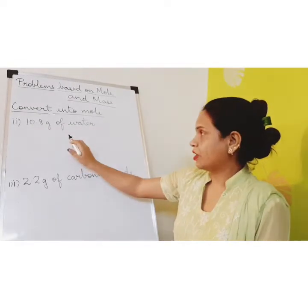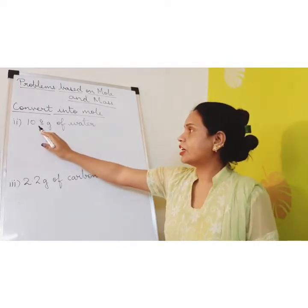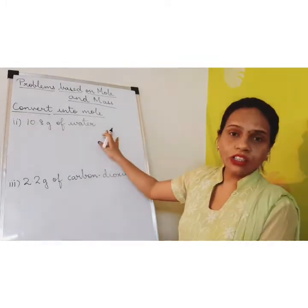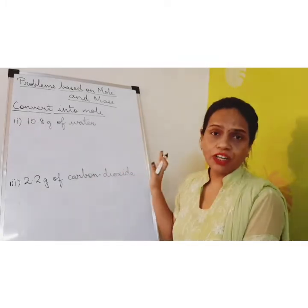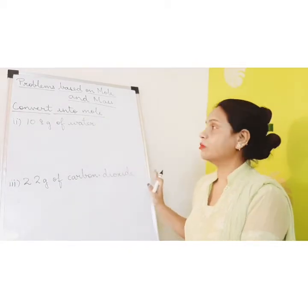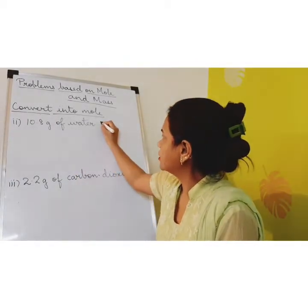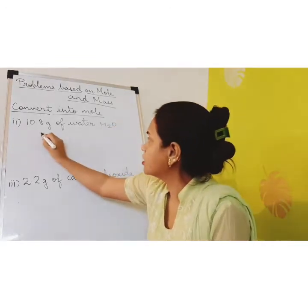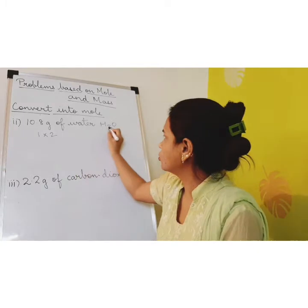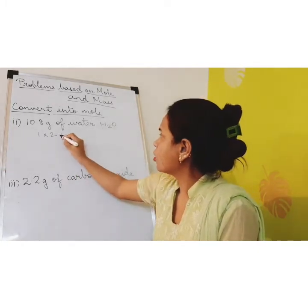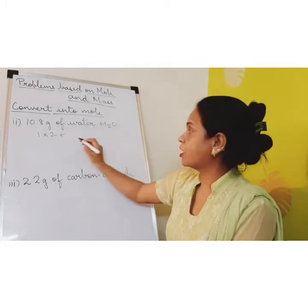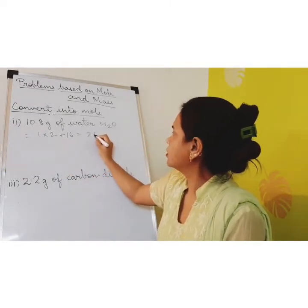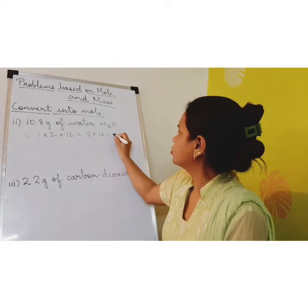Now we come to the second one. We have to find out the number of moles for 10.8 grams of water. Now water is H₂O. First let's find out the molecular mass of water. For hydrogen, the atomic mass is 1 into 2 because there are 2 atoms, plus oxygen whose atomic mass is 16. That equals 2 plus 16, which equals 18.